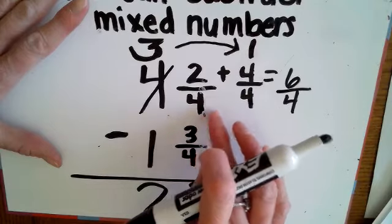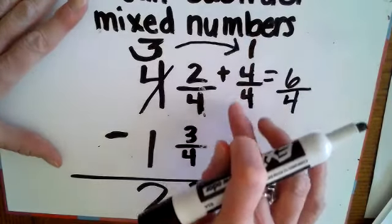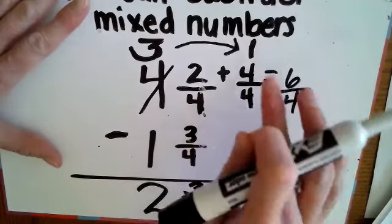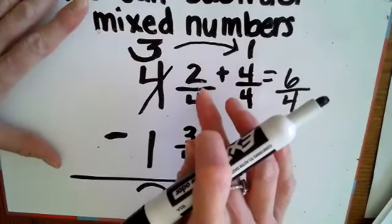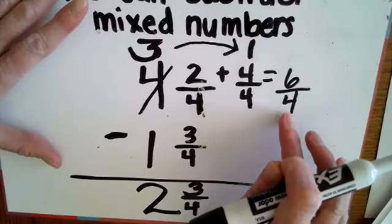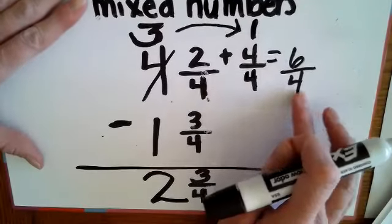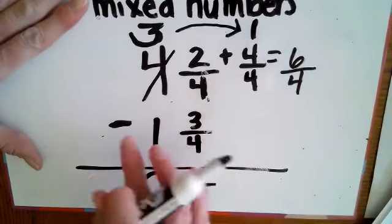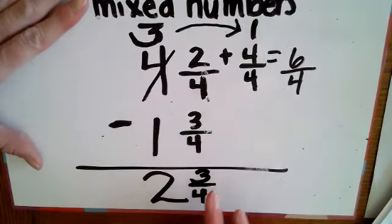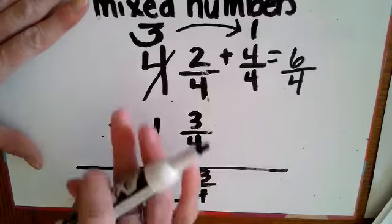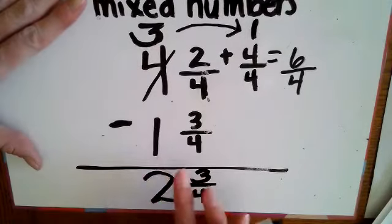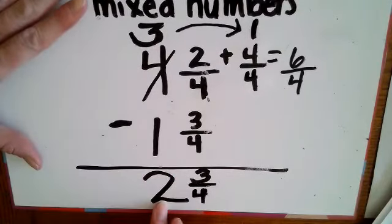Since that's a four, I wrote that one whole as four fourths. I had to add that whole to what was already there which was two fourths and that gave me for my top fraction six fourths. Then I did six fourths subtract three fourths and I got three fourths. Three wholes take away one whole is two wholes. Two and three fourths.